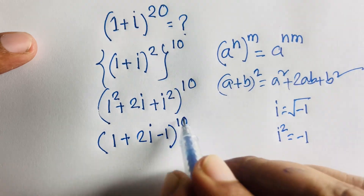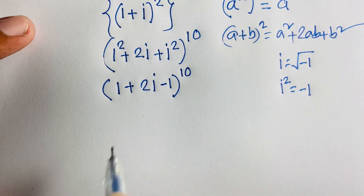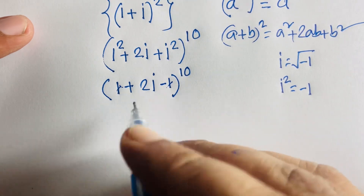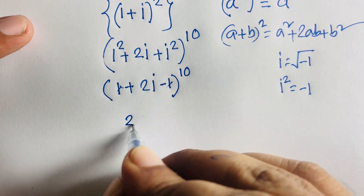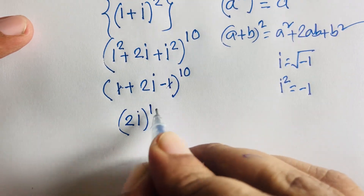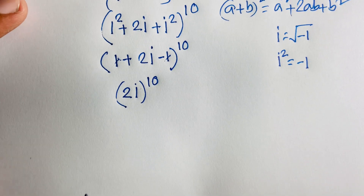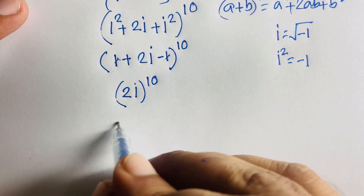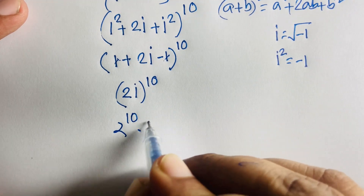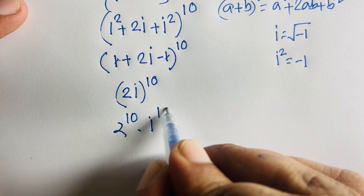The 1 and -1 cancel, leaving 2i. So the expression becomes (2i)^10, which equals 2^10 times i^10.